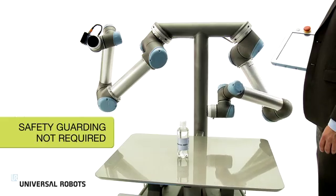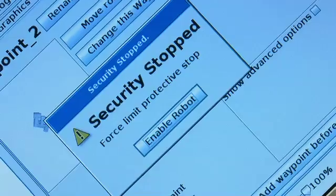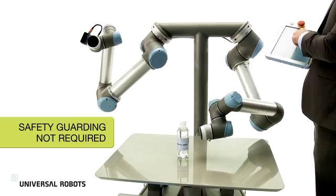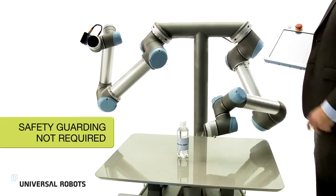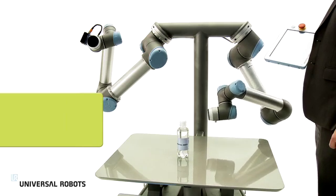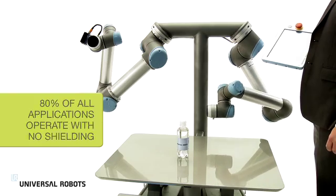Employees can work right alongside the robot. If a person comes into contact with the robot arm, it automatically stops operating, ensuring worker safety. This enables you to integrate the robot right into your production with no need for safety guarding. 80% of current Universal Robots applications operate with no shielding.